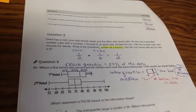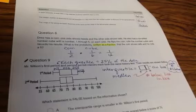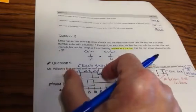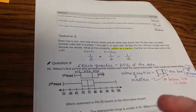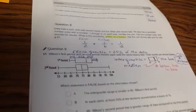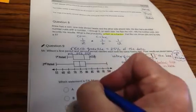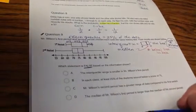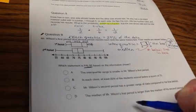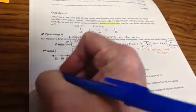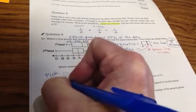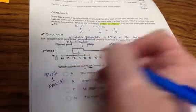Question number 9. Mr. Wilson's first period and second period classes each took the same history test. The results are shown below. So we see first period's on top, second period's on the bottom. Immediately, you should think about what do you notice. Well, I can see that the spread here is smaller for first period than second period. Which statement is false? Based on the information shown. So we're hoping that out of these four choices, three of them are easily proven to be true, and we have to pick the false. So I'm going to write myself a note. Pick one false.